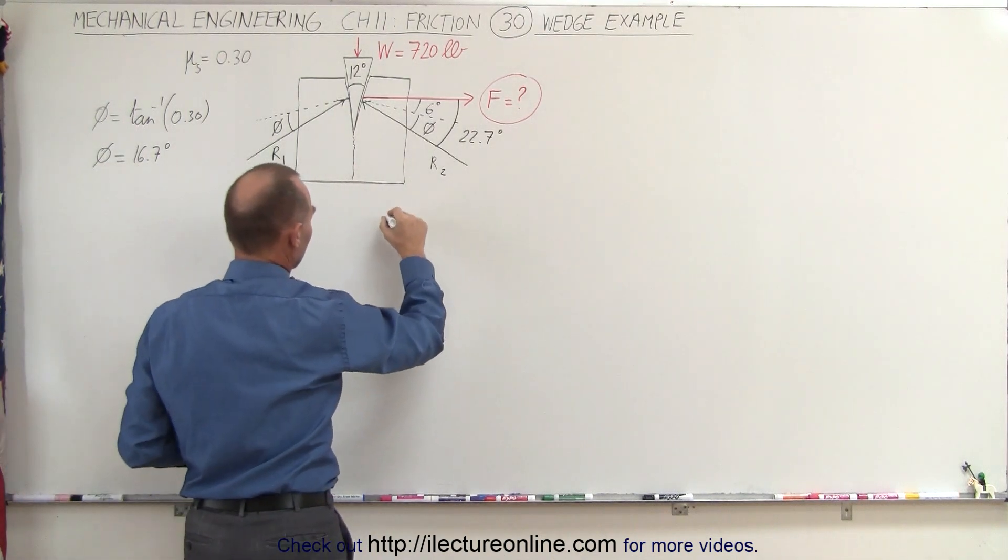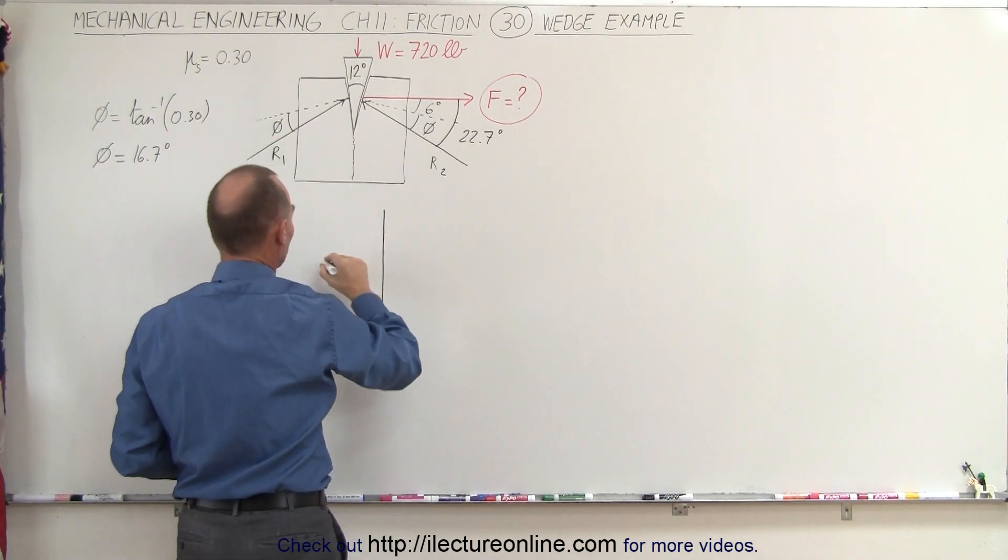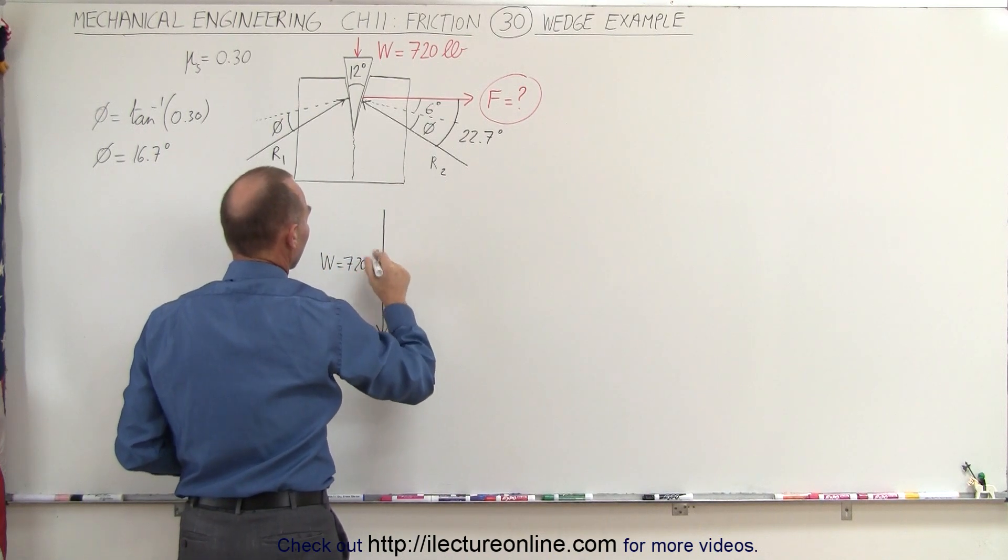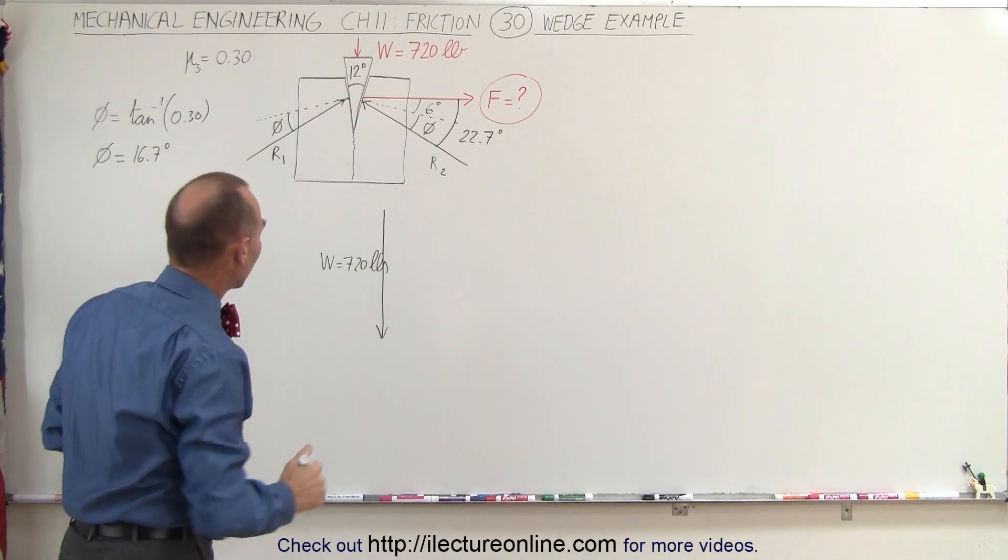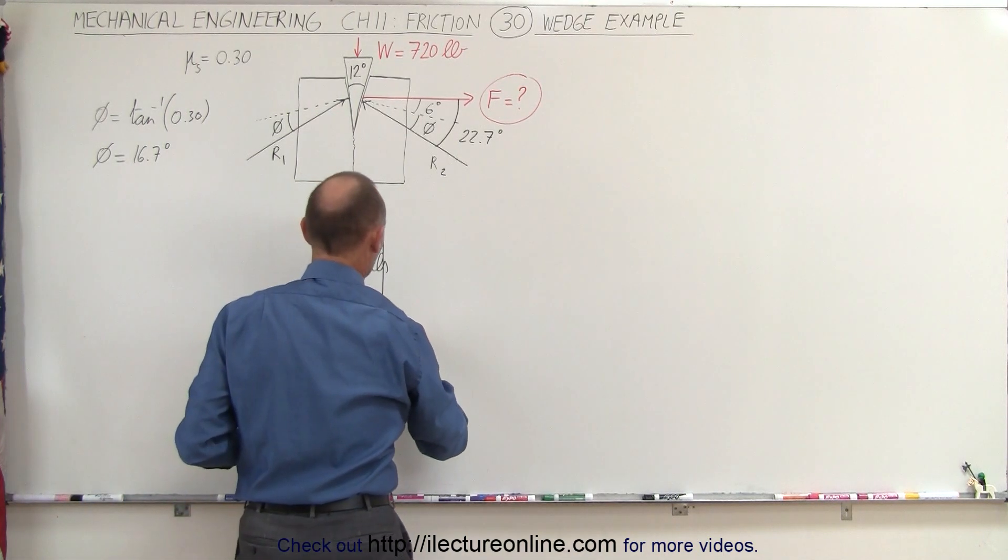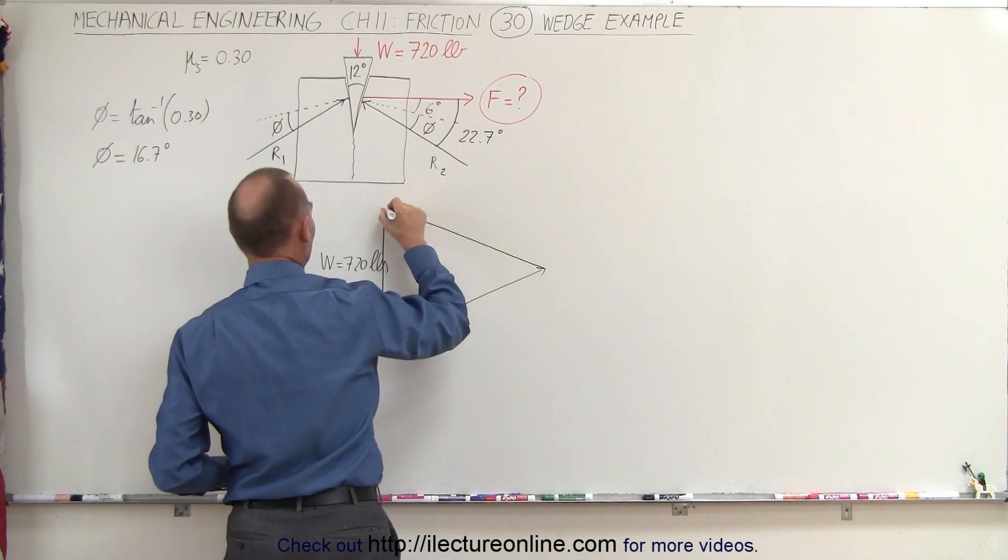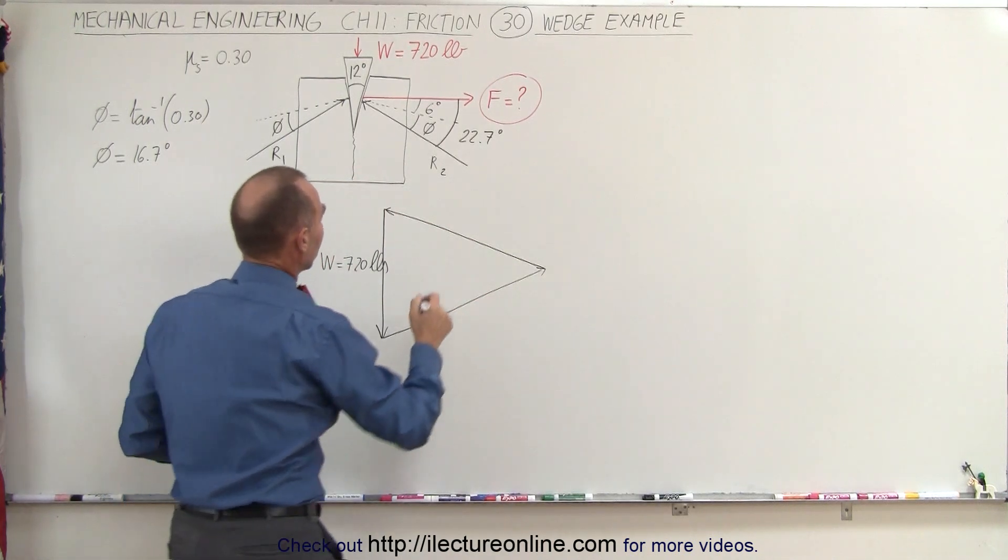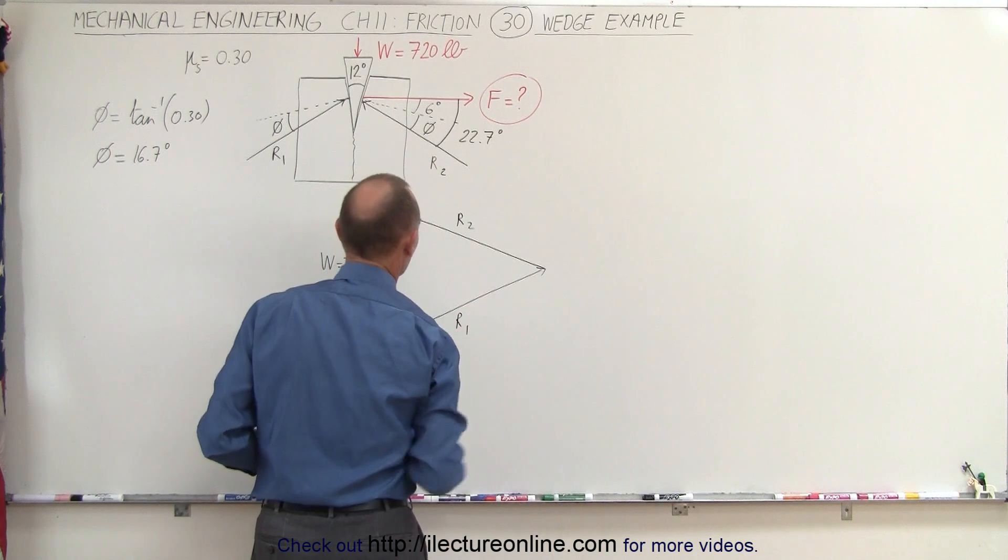This allows us now to draw the sum of the three forces. We have the force driving down the wedge, which we'll call W, which is 720 pounds, synonymous to the weight of an object. We have reaction force 1 coming this way, and reaction force 2 coming this way. The three forces should add up to zero.